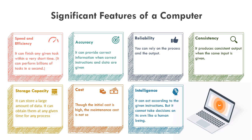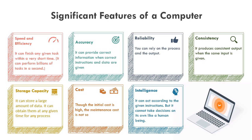It can obtain stored data at any given time for any process. Cost — though the initial cost is high, the maintenance cost is not so. Intelligence — it can act according to given instructions, but it cannot take decisions on its own like a human being.